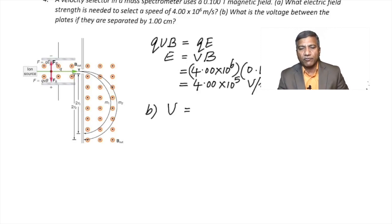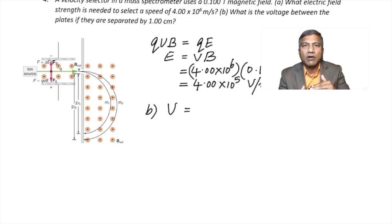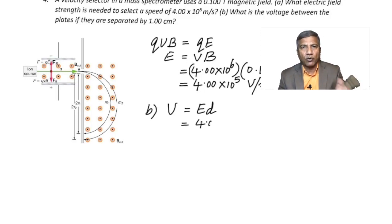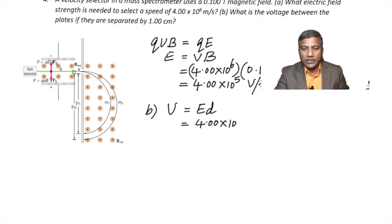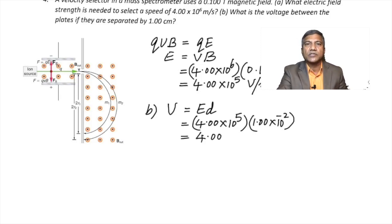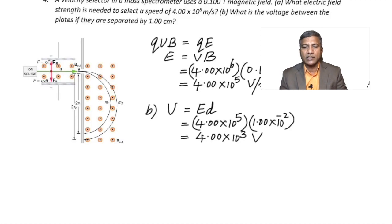For part B, the voltage between the plates: the electric field strength equals voltage divided by distance, so V = E × d. The electric field is 4.00 × 10⁵ V/m and the plate separation is 1.00 cm = 1.00 × 10⁻² m. This gives a voltage of 4.00 × 10³ volts.